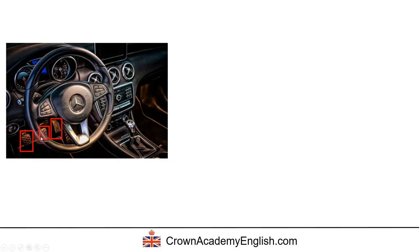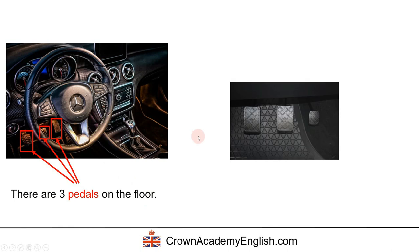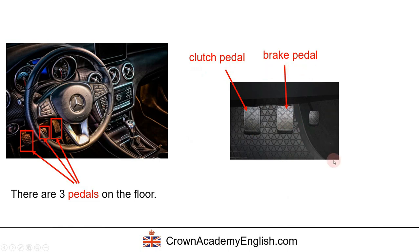Can you see there are three little things on the floor? We say there are three pedals on the floor — this is for a manual car, not an automatic. The first one is called the clutch pedal, and we use it when changing gears. Then we have the brake pedal, which we use when we want to reduce speed. And finally, this is called the accelerator pedal — we use this when we want to increase speed. Sometimes you'll hear it called the gas pedal, but the proper name is accelerator pedal.